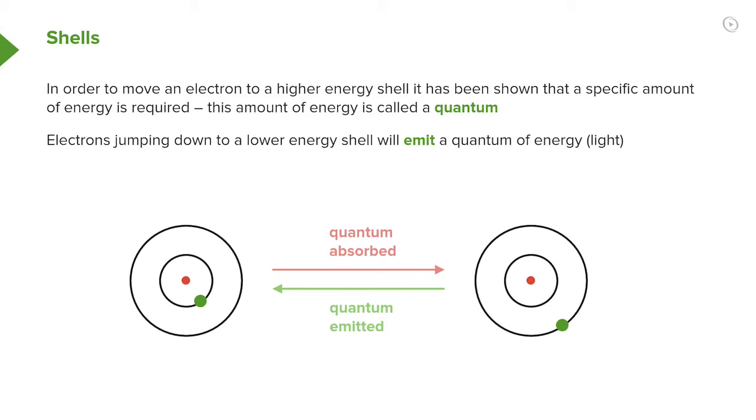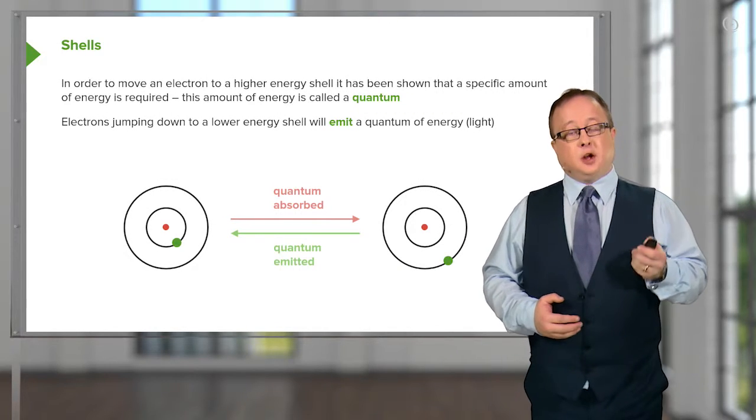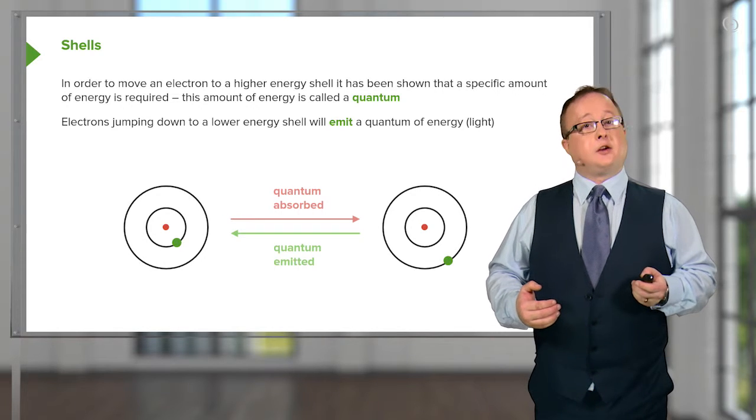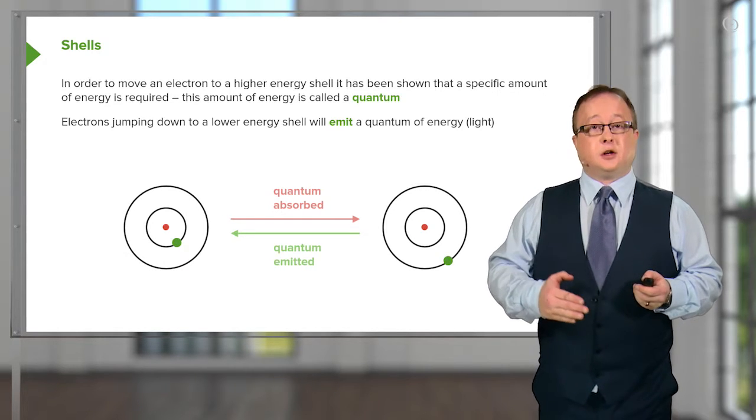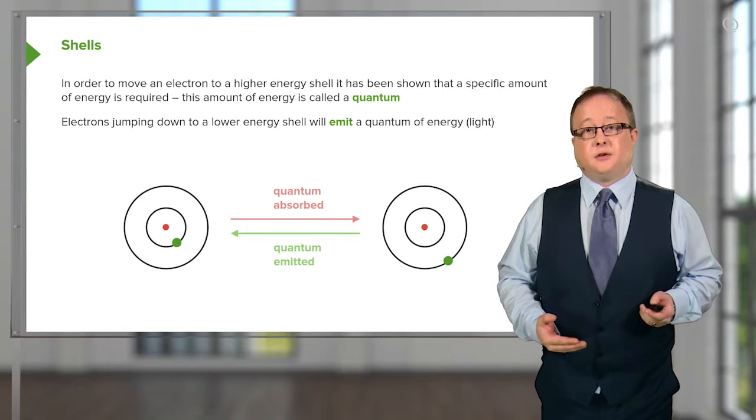To move it from shell one, for example, to shell two. When we start talking about molecular orbitals and interactions, these movements of electrons from higher shells to lower shells are the origins of things like fluorescence and phosphorescence.